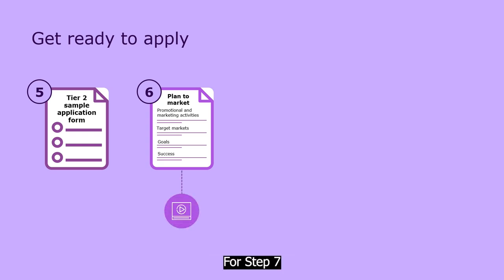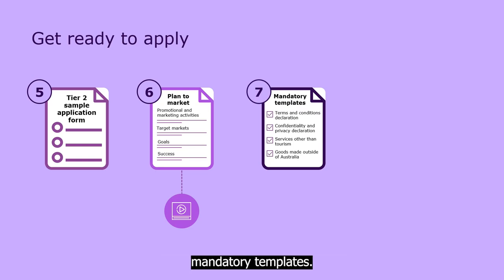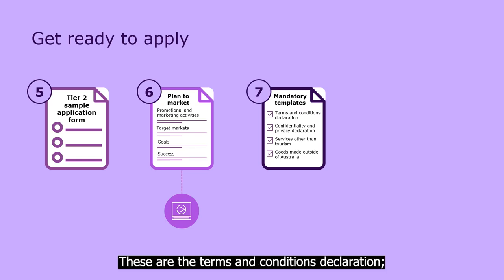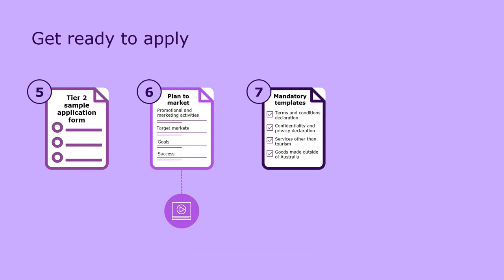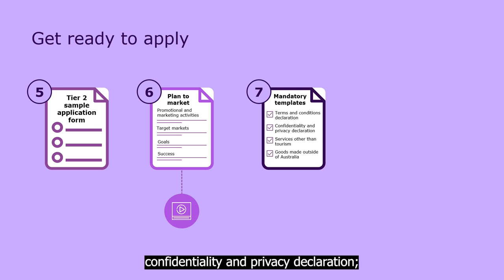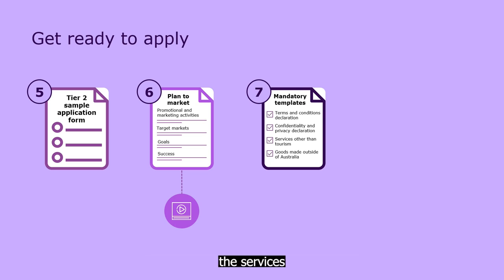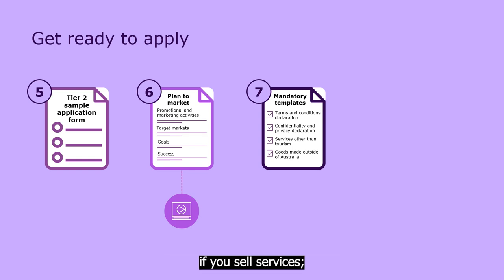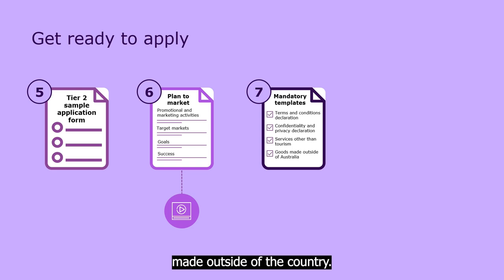For step seven, you need to complete all Tier 2's mandatory templates. These are the Terms and Conditions Declaration, Confidentiality and Privacy Declaration, the Services Other Than Tourism attachment if you sell services, and the Goods Made Outside of Australia attachment if you're marketing goods made outside of the country. You'll find them all on the website.